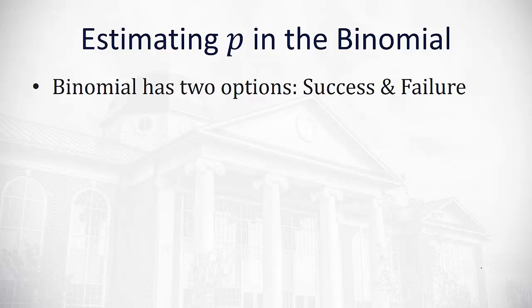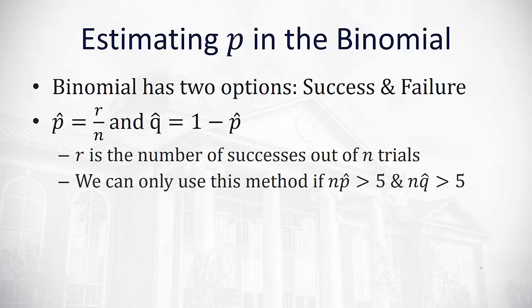Often we're interested in what proportion of our results were successes. This is what we call p hat. The proportion or percentage of successes is the number of successes, r, divided by the number of options, n.